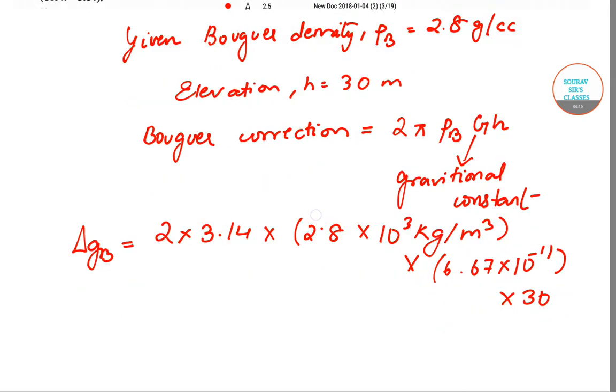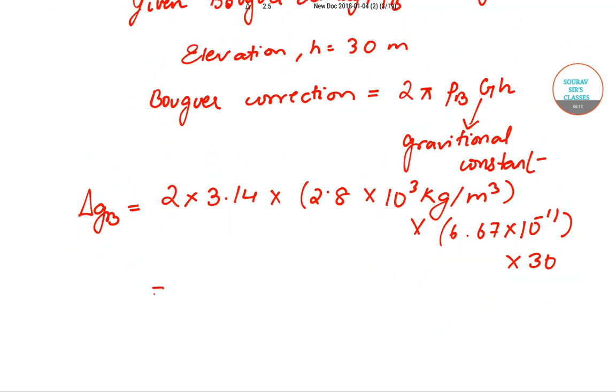So we will get the answer as 0.00003518558 meter per second square and this will be equal to 3.518. The unit in which we have to represent is not actually meter per second square and let me give you the relation between the two units.